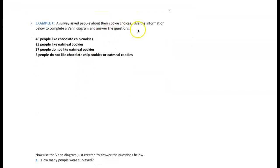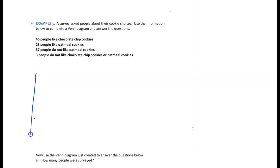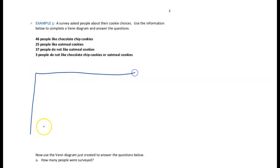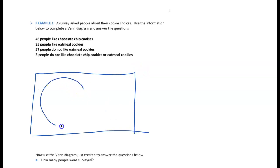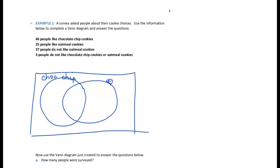Example 3. A survey asked people about their cookie choices. Use the information below to complete a Venn diagram and answer the questions. Notice that there are two different types of cookies mentioned: chocolate chip cookies and oatmeal cookies. That tells us that as we draw our Venn diagram we need two sets — one labeled chocolate chip cookies and a second labeled oatmeal cookies.